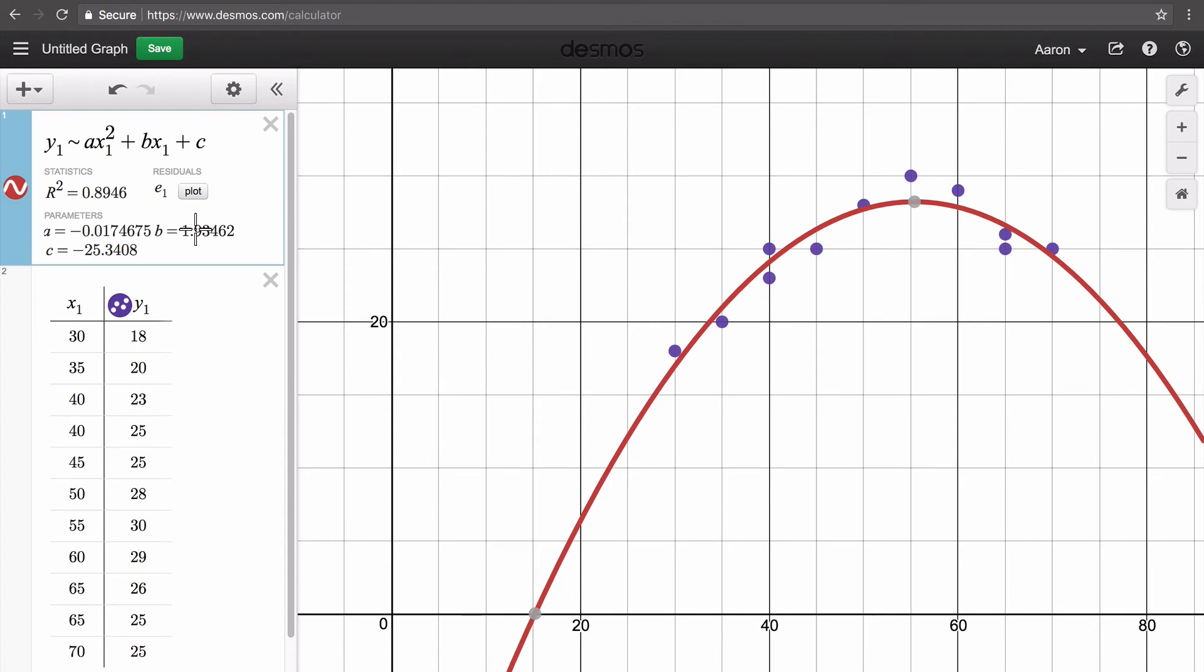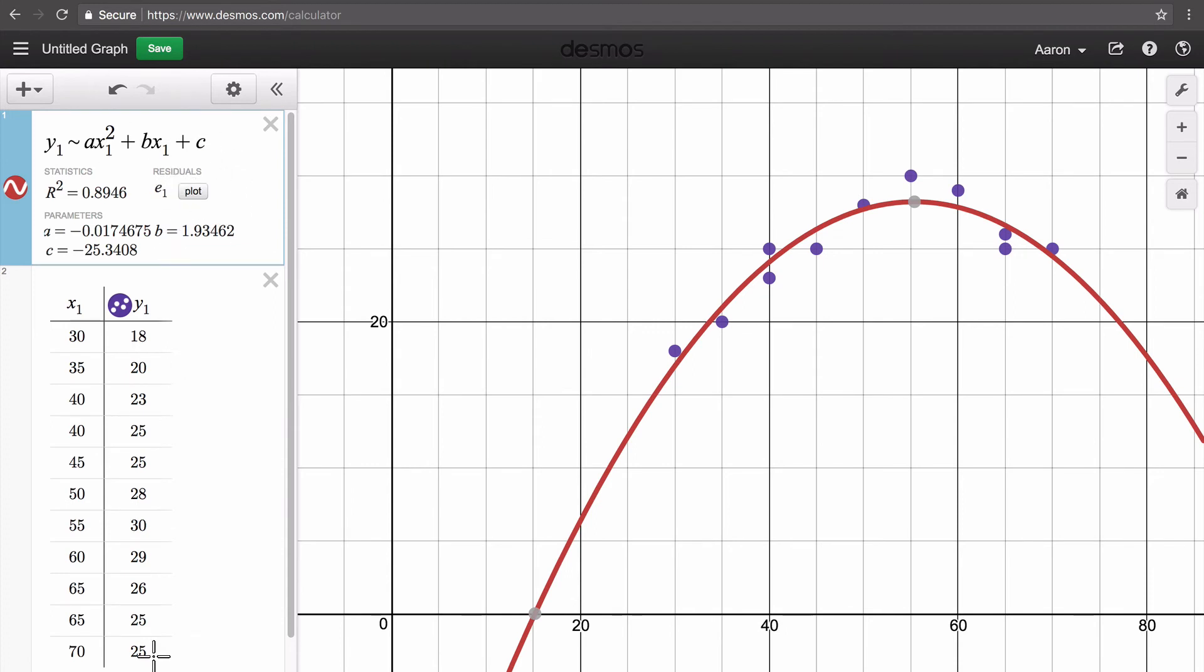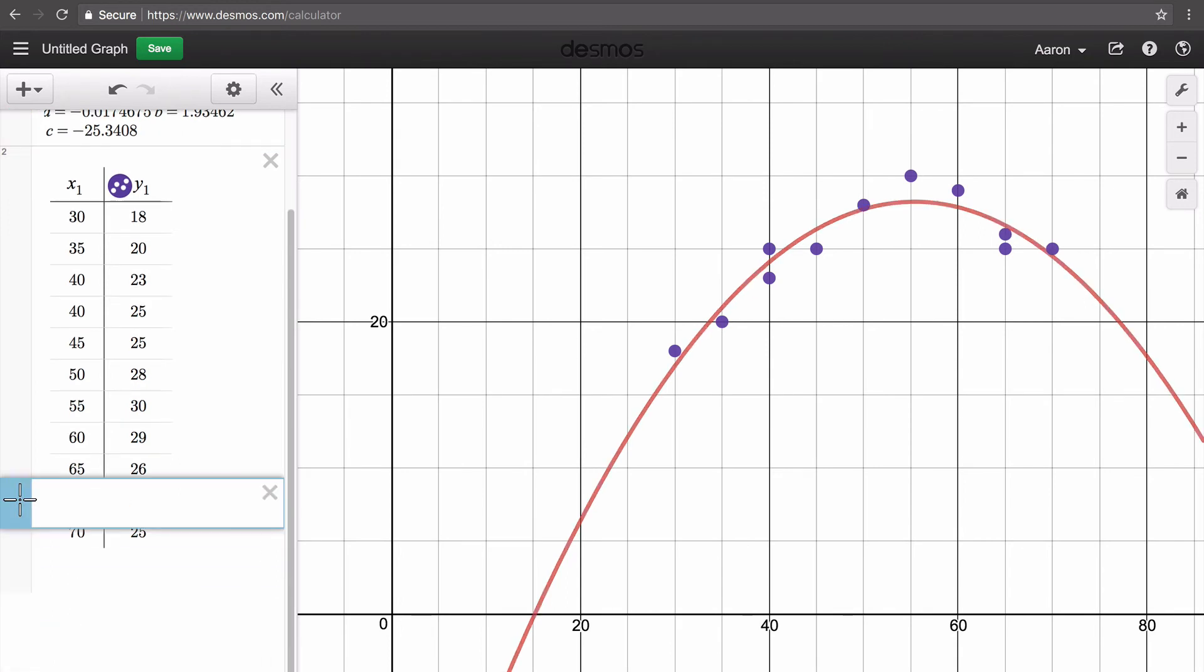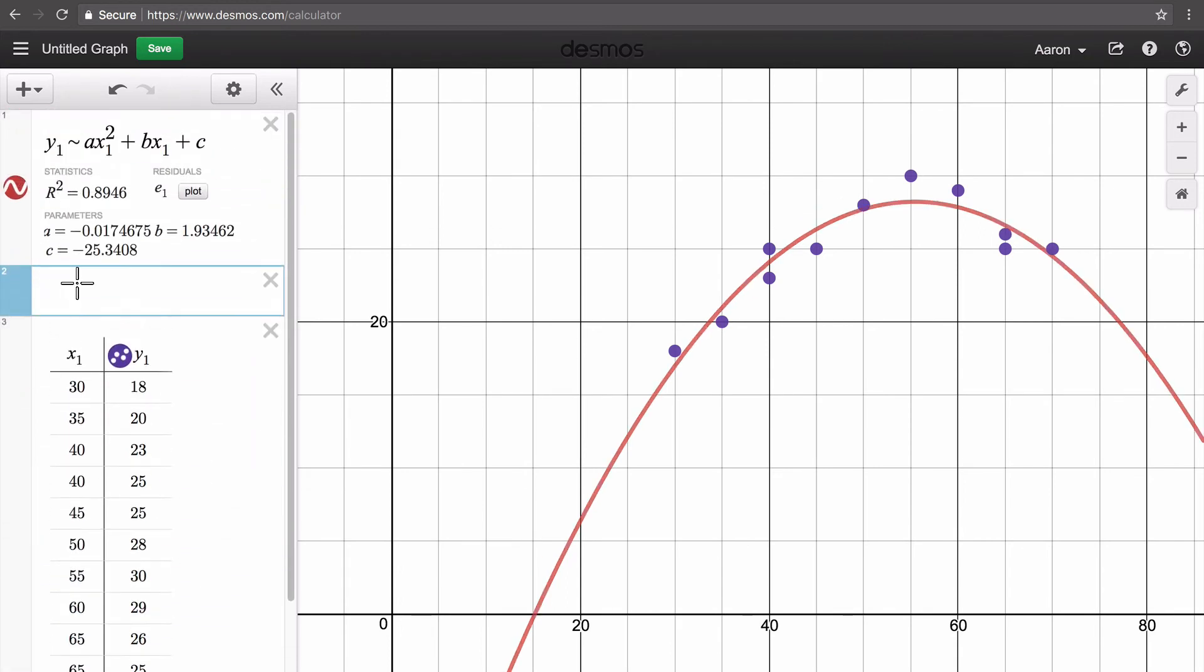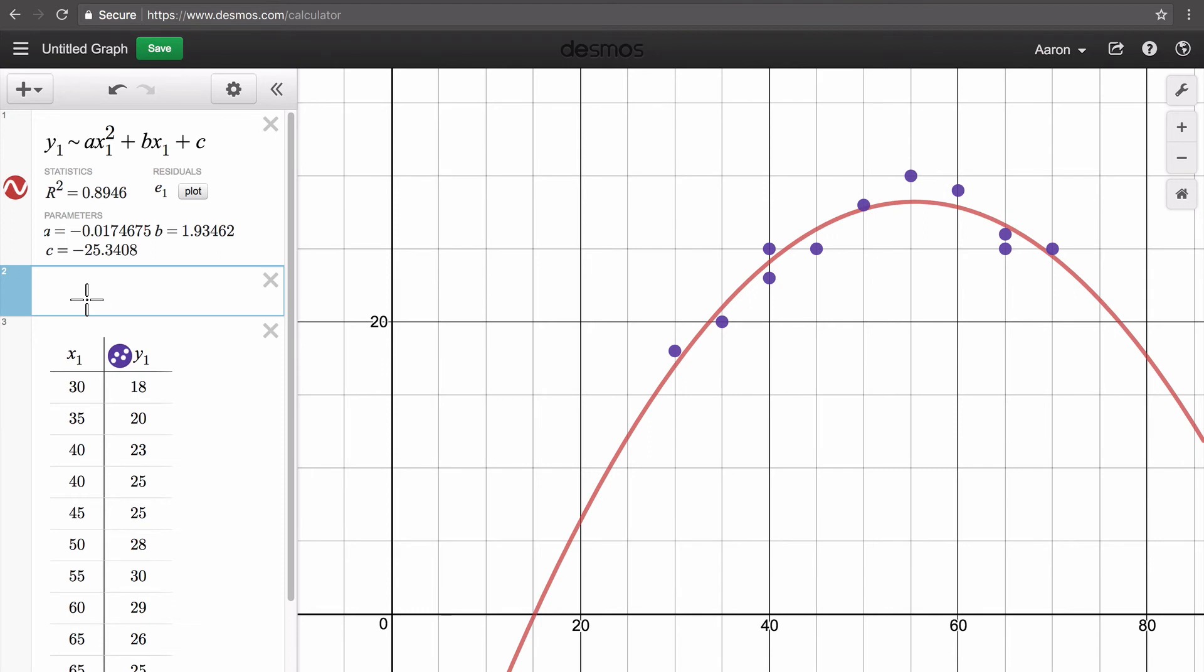And then that is our equation in standard form. We could have done our equation in vertex form, and I'm actually just going to bring a new cell up here and do our equation directly in vertex form right in the same graph.